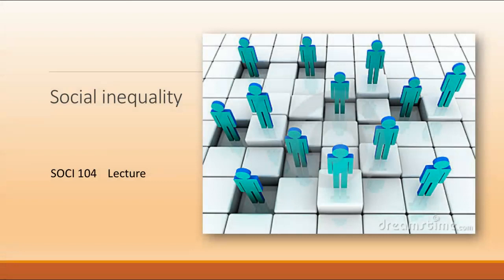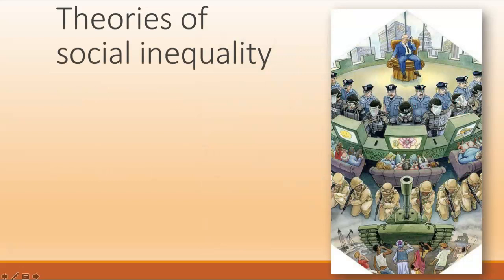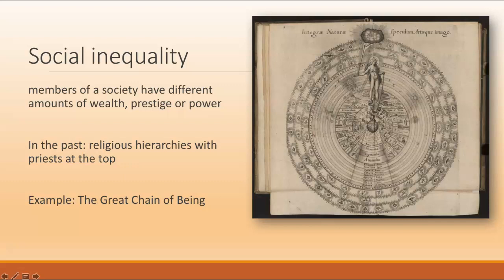In this lecture we take on one of the most distinctive features of almost every human society, which is inequality. At the core of this subject is the fact that some have more and some have less. We're going to focus on three sociological theories of inequality: those of functionalism, conflict theory, and those of Max Weber.